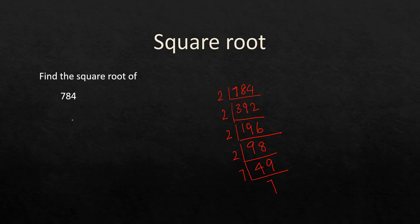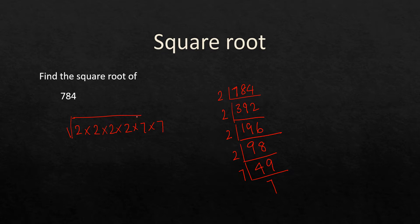So the square root of 784 can be written as the square root of 2 × 2 × 2 × 2 × 7 × 7. When you multiply these together that gives you 784, because we have expressed 784 in terms of its prime factors.